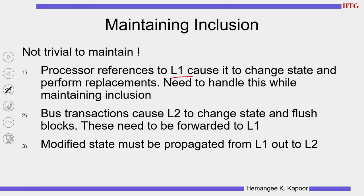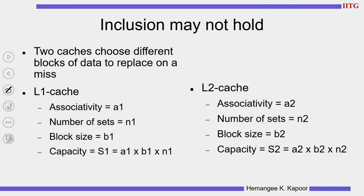L1's state changes need to be informed to L2, and L2's state changes should be informed to L1. We need to propagate information from L1 to L2. Will this always be guaranteed? May not be — because even if we start with L1 as a subset of L2, during runtime this may not hold. To understand this we will take an example.